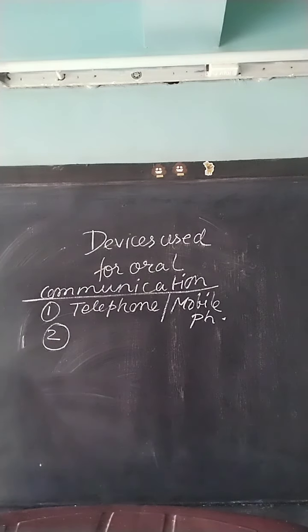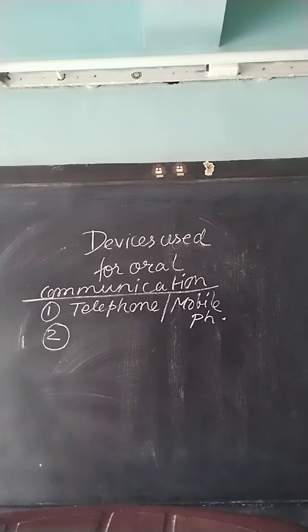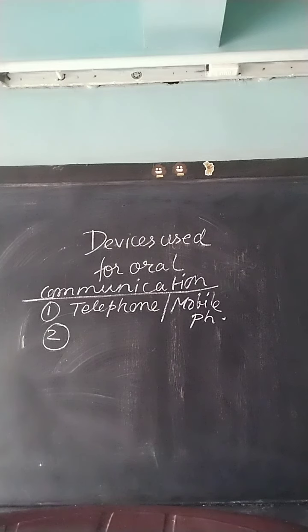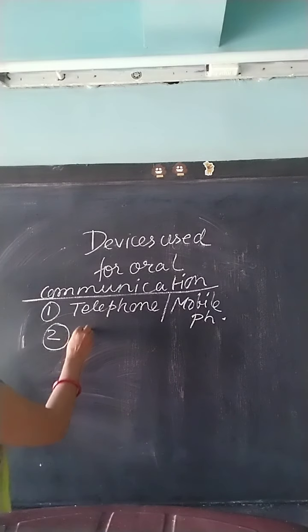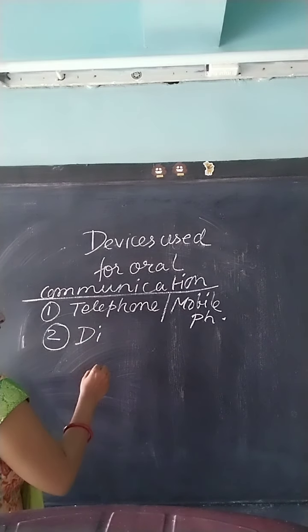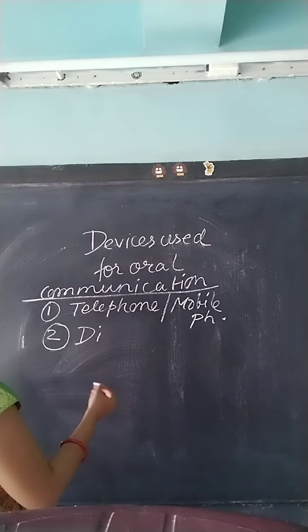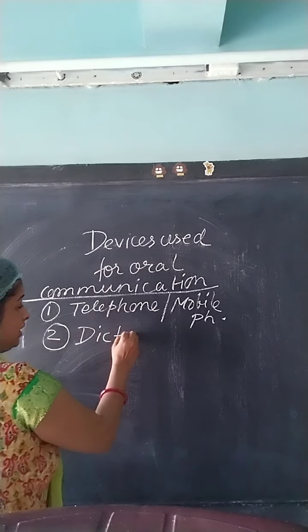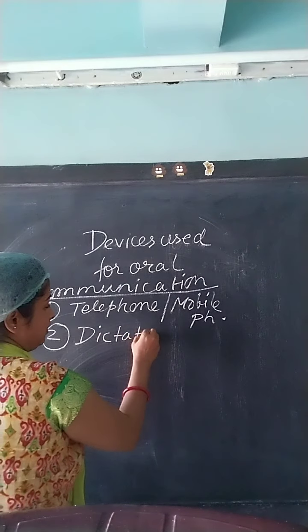Apart from this device, another device used for oral communication is the dictating machine. A dictating machine is where dictations are recorded and answered. So dictating machine is the second device.